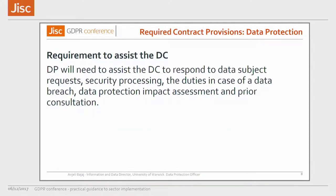The supplier also has a requirement to assist the data controller in various instances. This would include data subject requests, security of processing, duties to the ICO, duties to the data subject in case of a breach, and data protection impact assessments. When you're starting off on a new proposed agreement or a renewal, you have to start with a PIA — whether it's a short or long PIA — and your supplier needs to assist you on that and also for prior consultation.